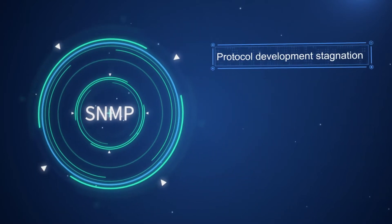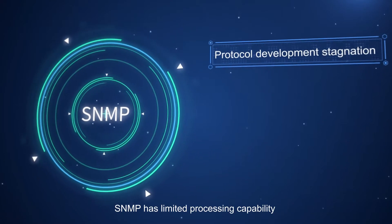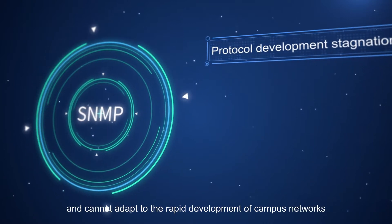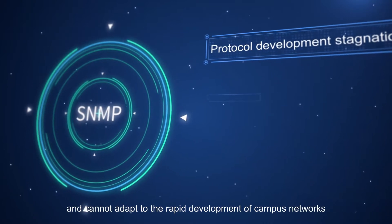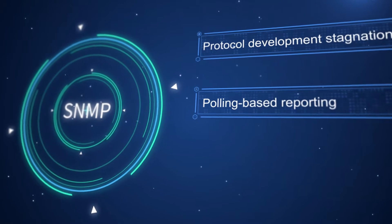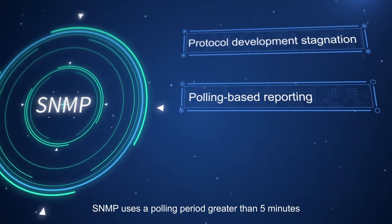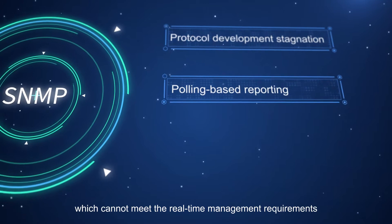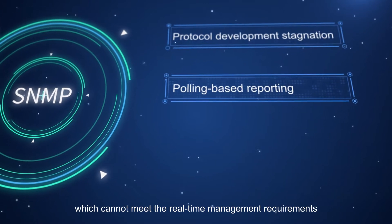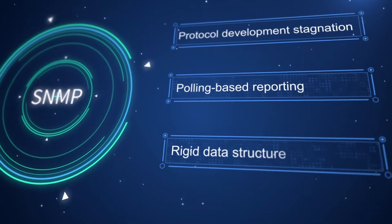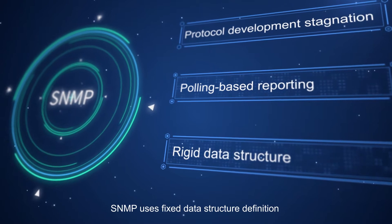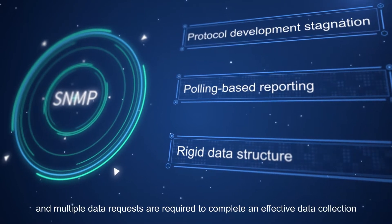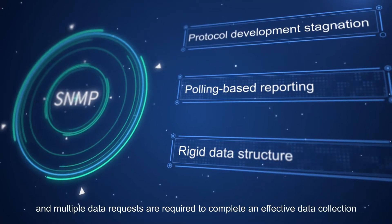The restriction of using SNMP O&M in traditional management needs to be removed urgently. SNMP has limited processing capability and cannot adapt to the rapid development of campus networks. Its polling period is greater than five minutes, which cannot meet real-time management requirements. SNMP also uses a fixed data structure definition, requiring multiple data requests to complete an effective data collection.